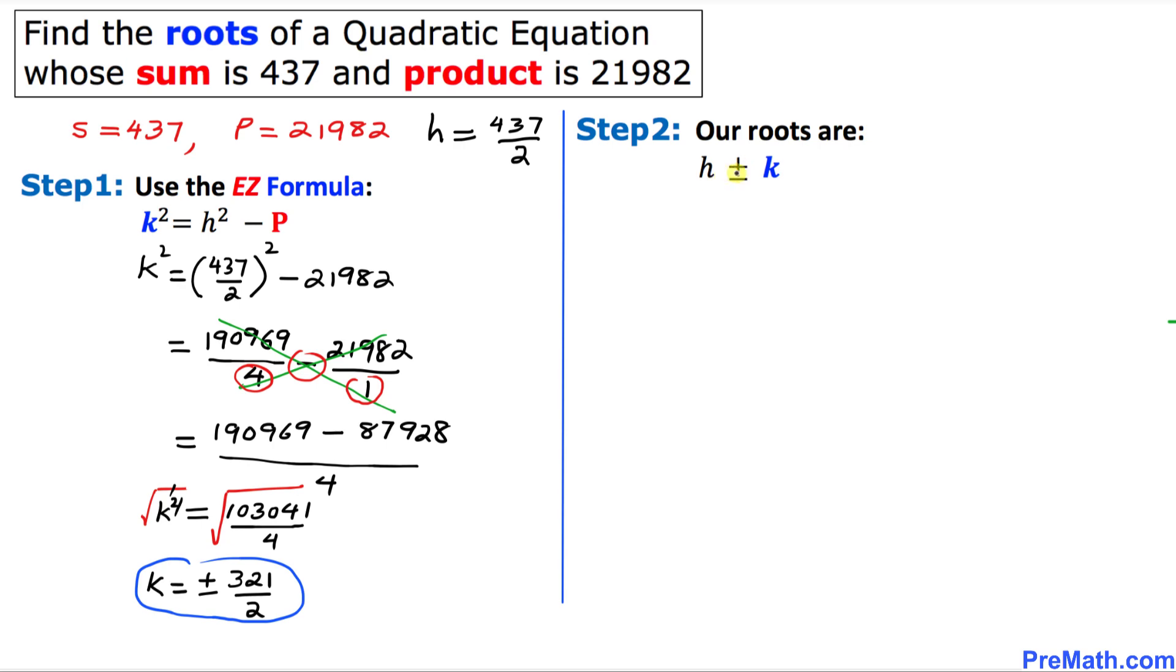Here is our final step. In this step our roots are H plus minus K. We know H is 437 divided by 2 plus minus K is 321 divided by 2 and that is pretty much our answer. The only thing is we need to split these numbers. First with the positive sign and the other with the negative sign.